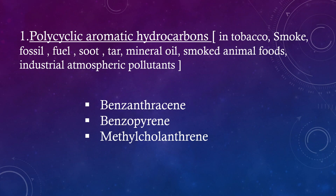Polycyclic aromatic hydrocarbons are found in tobacco smoke, fossil fuel, soot, tar, mineral oil, smoked animal foods, and industrial atmospheric pollutants. Examples include benzanthracene, benzopyrene, and methylcholanthrene.